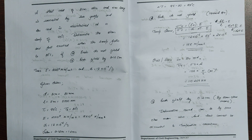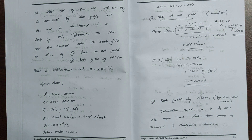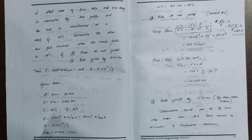A steel rod of 3 cm diameter and 5 meters long is connected by 2 rigid supports and the rod is maintained at a temperature of 95 degrees Celsius. Determine the stress and the pull exerted when the temperature is 430 degrees Celsius. Case (a): the supports do not yield. Case (b): the supports yield by 0.12 cm.